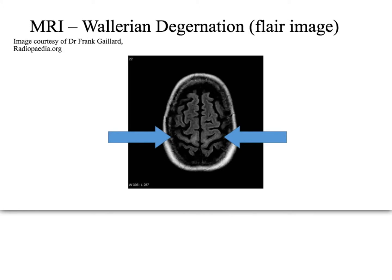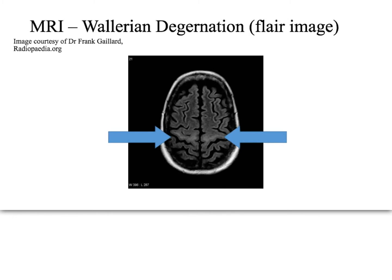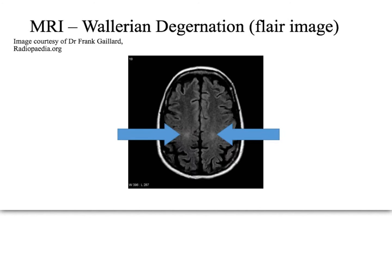Now let's look at imaging. Something typically seen on MRI with ALS is Wallerian degeneration. On this FLAIR image, you can see the motor cortex — the precentral gyrus — and an area of abnormal brightness within it. That bright white signal follows along the corticospinal tract all the way through the MRI, due to damage in the corticospinal tract.